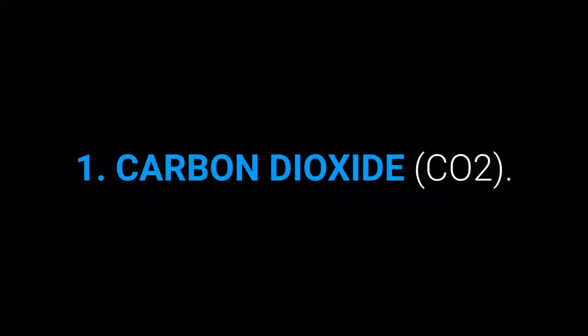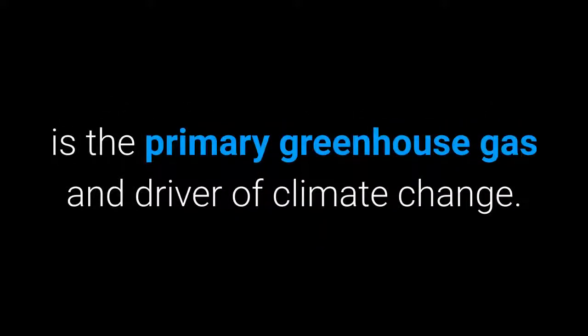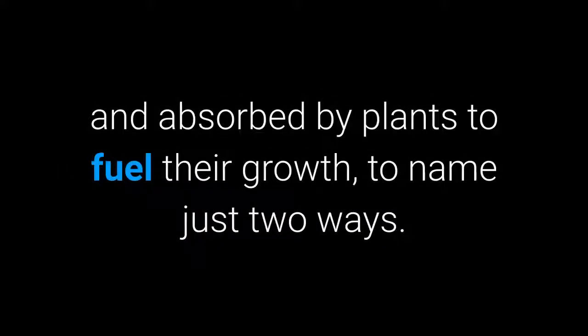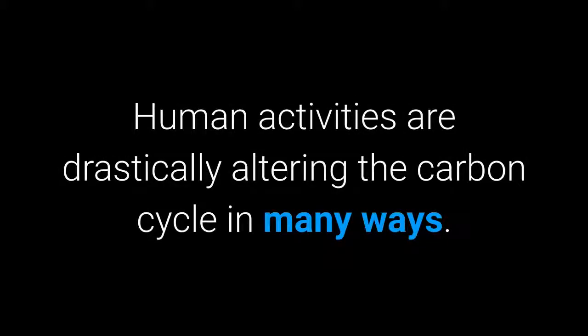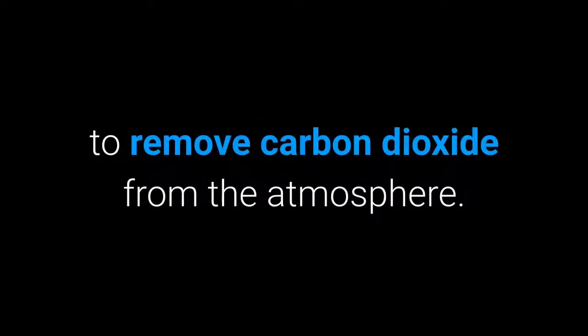1. Carbon Dioxide. The chemical compound carbon dioxide, also known as CO2, is the primary greenhouse gas and driver of climate change. It's an integral part of life cycles on Earth, produced through animal respiration including human respiration, and absorbed by plants to fuel their growth. Human activities are drastically altering the carbon cycle — by burning fossil fuels and adding more CO2 into the atmosphere, and by affecting the ability of natural sinks to remove CO2 from the atmosphere.